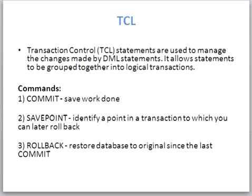It means if you have created a table, performed insertion, updation — all those transactions are saved when you run the COMMIT command. Another one is SAVEPOINT, which is used to identify a point in a transaction which you can later roll back to. We can also call the SAVEPOINT a bookmark. The third one is ROLLBACK. ROLLBACK is used to restore the database to its original state since the last commit — meaning we can restore all the transactions performed since the last commit.